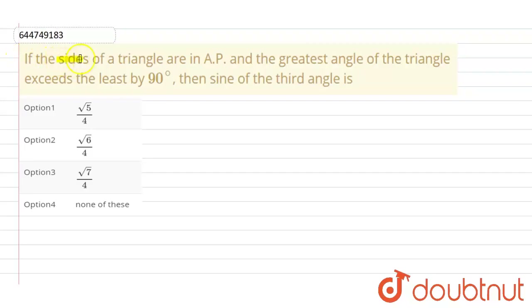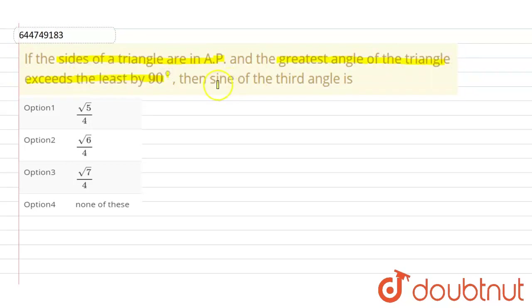If the sides of a triangle are in AP and the greatest angle of the triangle exceeds the least by 90 degrees, then what is the sine of the third angle? In this question we need to find the sine of the third angle.